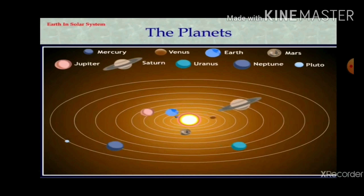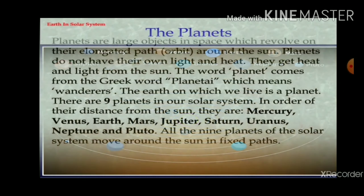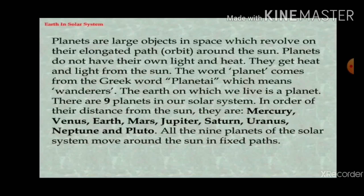Now we talk about planets. Planets are large objects in space which revolve in their own fixed paths — orbits — around the sun. Planets do not have their own heat and light; they get heat and light from the sun. The word 'planet' comes from the Greek word 'planetai.'